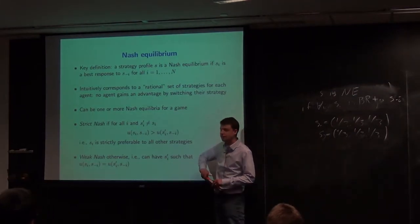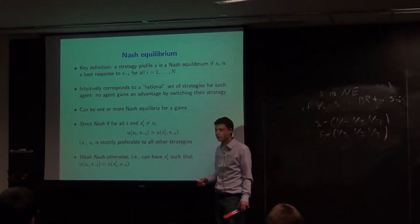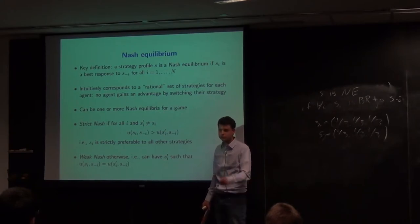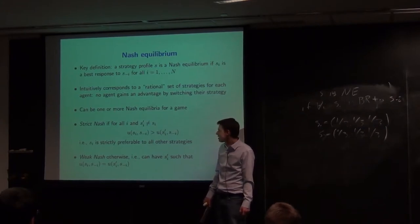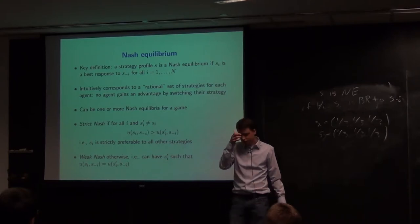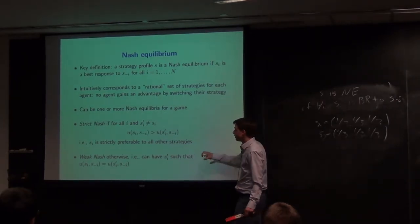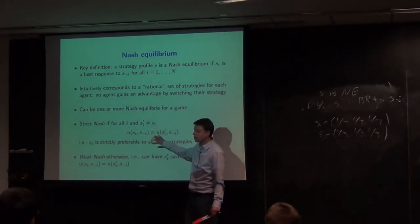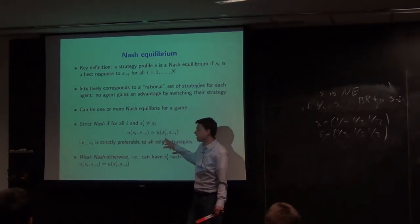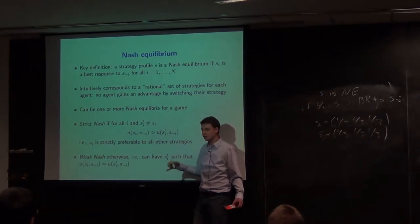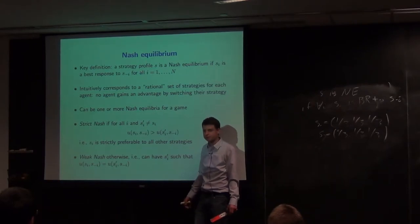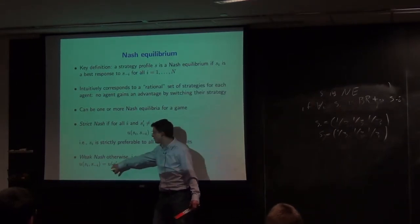There can be more than one Nash equilibrium for a game — we've already seen that in the Battle of the Sexes. An equilibrium is a strict Nash equilibrium if the strategy is strictly better than any other strategy for that agent — it's the unique best response. It's a weak Nash equilibrium otherwise — when some alternative strategies are equally good. Now let's go through some examples.